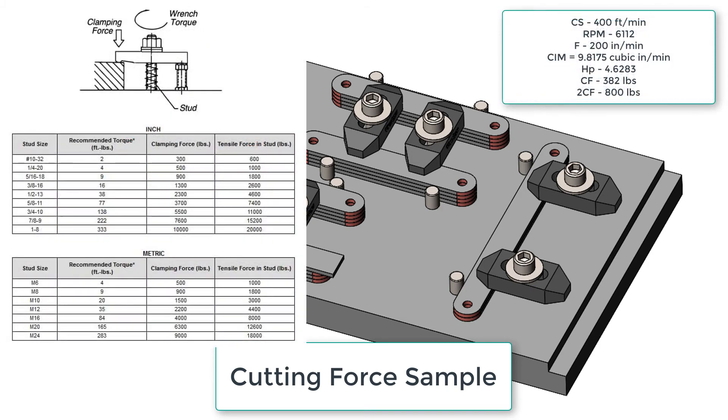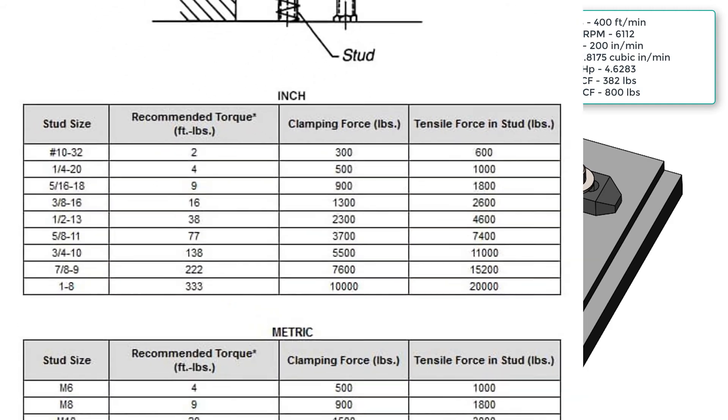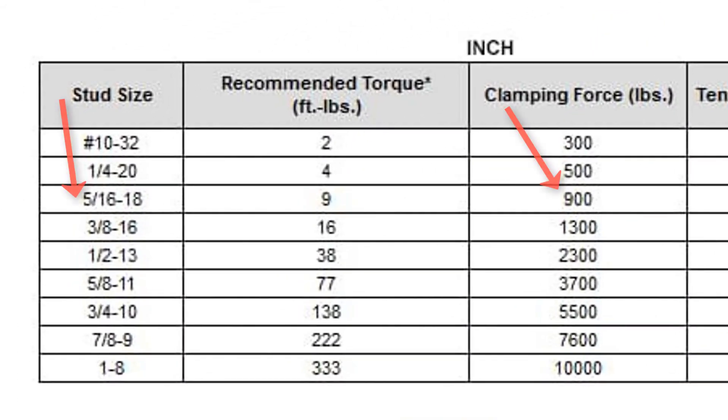My next step is to use this chart and find which inch bolt or metric bolt will resist 800 pounds of cutting force. Using this chart I can see that a 5/16-18 bolt will provide 900 pounds of clamping force over the part.